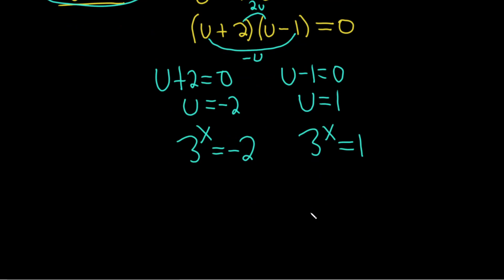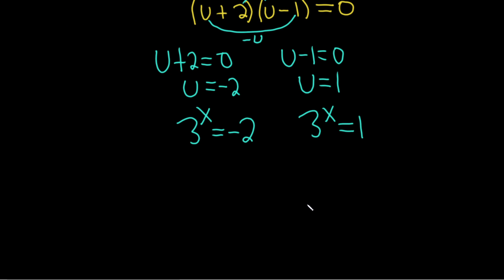Now we have to solve for x. First realize that 3^x = -2 is impossible because 3^x is always positive. If you think about the graph of y = 3^x, you see that it's always greater than 0. It's always above the x-axis, so it's always positive and can't be negative.